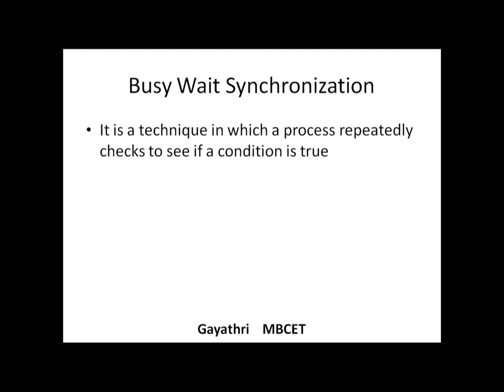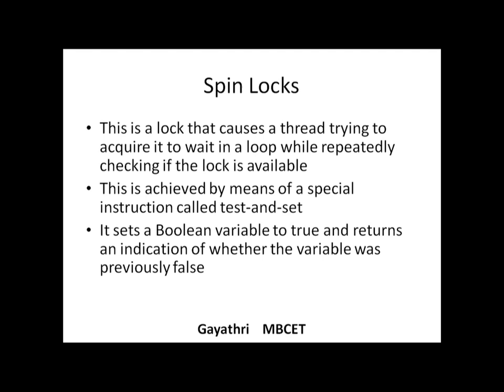Spin locks are mutual exclusive locks. A spin lock causes a thread waiting to enter the critical section to repeatedly check if the lock is available. The critical region is protected by a lock. Any thread trying to access that critical region repeatedly checks if the lock is free or occupied. If free, the thread acquires the lock and enters the critical region. If not free, it keeps checking. This continuous checking of the lock is called spinning, and the method is called a spin lock.